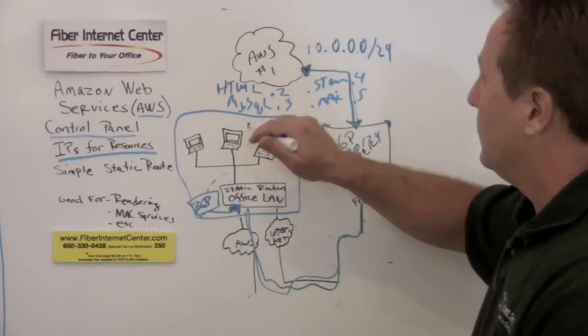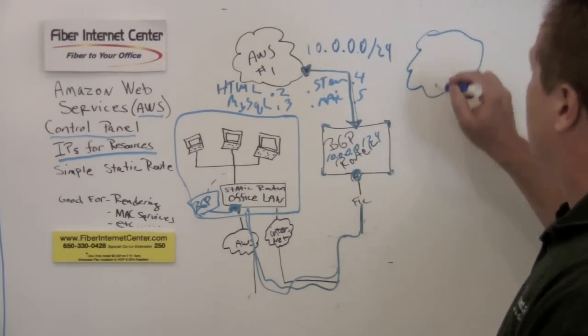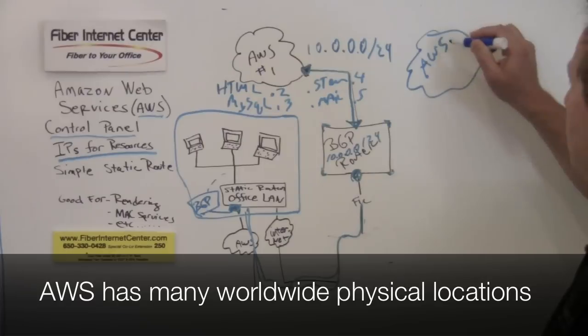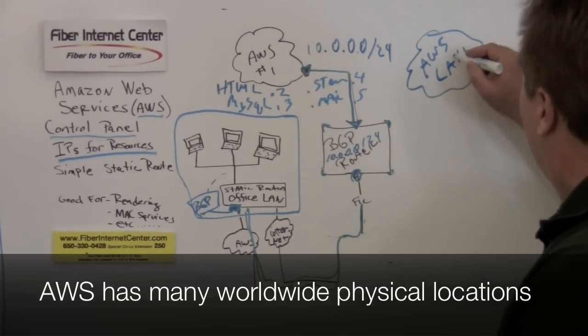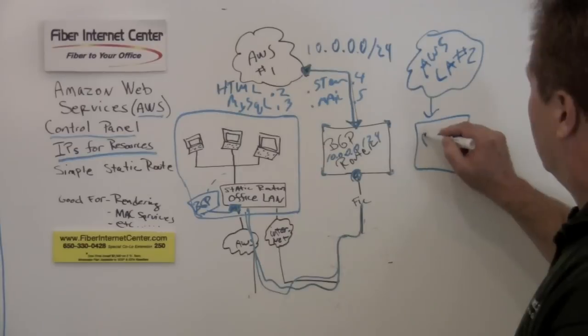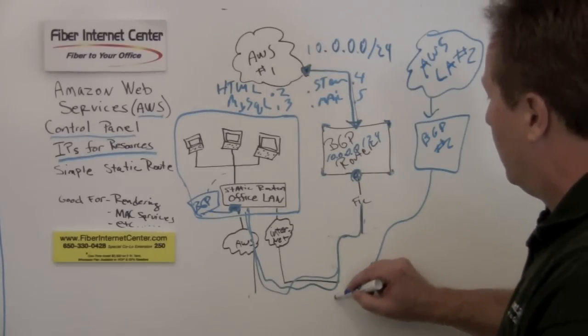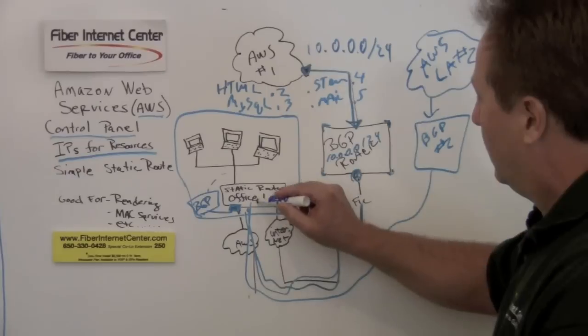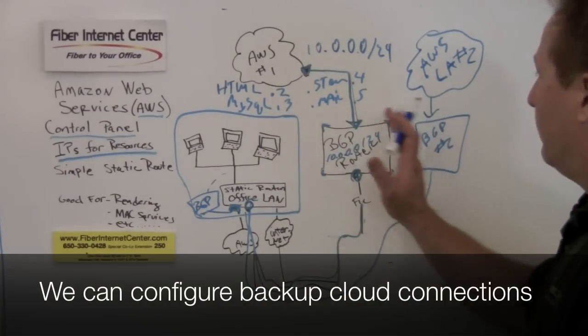For example, in California, you can have a connection in Silicon Valley and you can also have an AWS connection in, say, the Los Angeles area to the cloud there. And we can configure you at Fiber Internet Center to have two of those. So here's your BGP router number two. And we can also carry that to your office on another port.